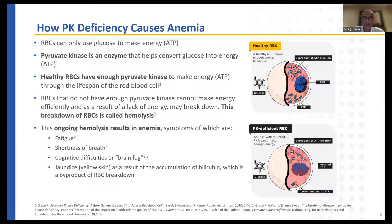The breakdown of red blood cells leads to fewer red cells in circulation, resulting in anemia. Symptoms include fatigue, shortness of breath, and cognitive difficulties or brain fog with more severe anemia. As a result of the hemolysis, bilirubin is produced — a breakdown product from the red blood cell — which causes the eyes to look yellow and urine to become dark yellow as well.